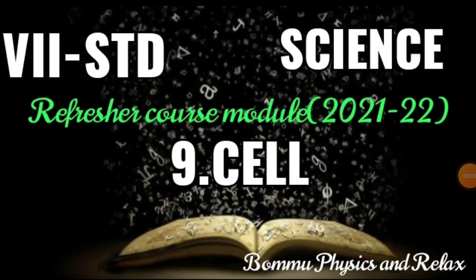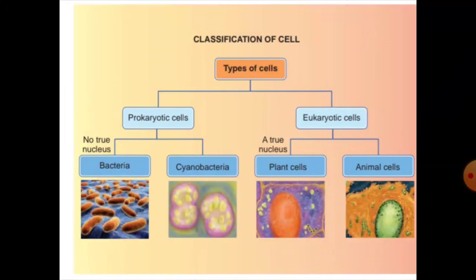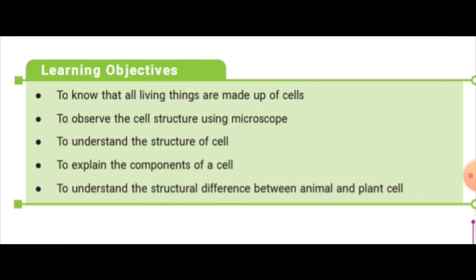Good morning students. We are going to see about the seventh standard science refresher course module 2021 to 22. In this class we will learn about Unit 9: Cell. As an introduction, we should know about the classification of the cell. There are two types of cells: one is prokaryotic and another one is eukaryotic. For example, prokaryotic cells include bacteria and cyanobacteria. Living things are made up of cells.